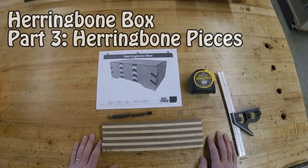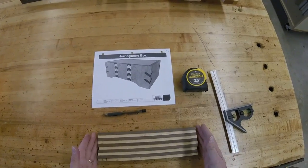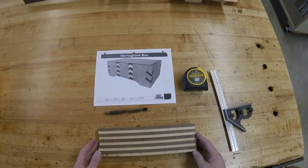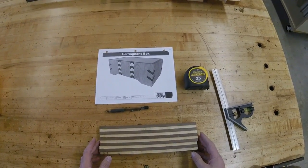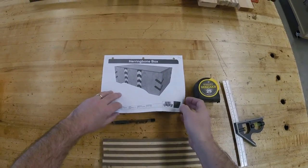Ok, on to the next step of our herringbone box. You've got your herringbone stock set up right here, we took these out of the clamps and we're going to go over to the miter saw now and we're going to cut this at a 30 degree angle.